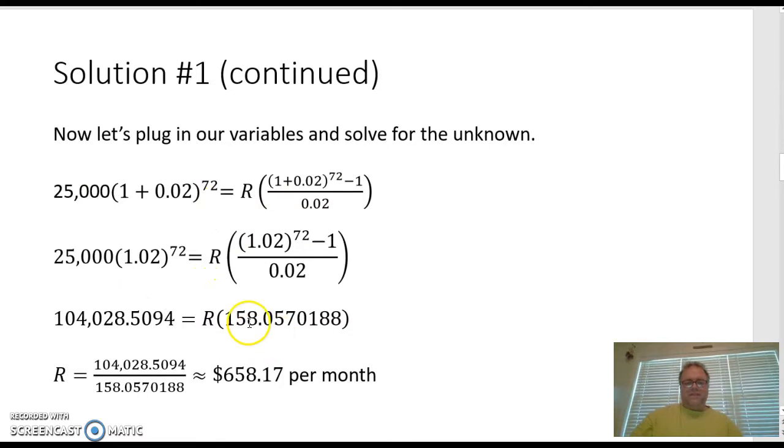You divide both sides by the number next to your variable, which is the 158.0570188. And you're going to get an approximate monthly payment of $658.17. That's quite a large payment for a six-year loan. You can see that interest rate really had a large bearing on our answer here.